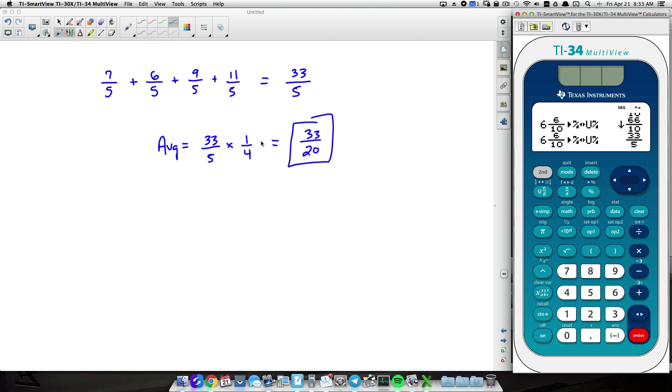So 66 over 10 is 33 over 5. I just wanted to show you our sum was right. And since we want to divide by 4 because we're trying to find the average of 4 numbers, 4 fractions. Check out what we got. 1 and 13 20ths. Let's convert that to an improper fraction. We got 33 over 20, which matches our answer.